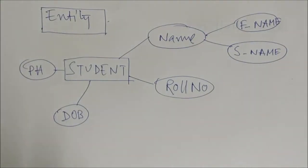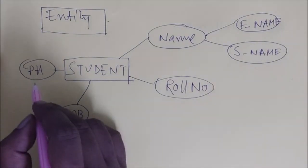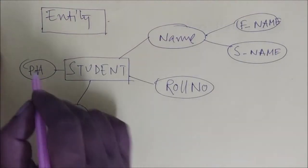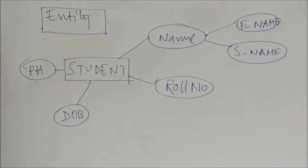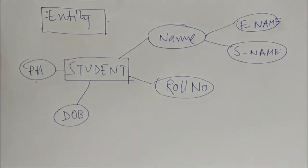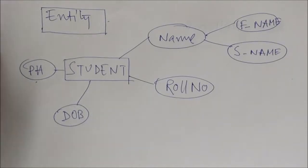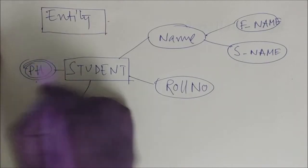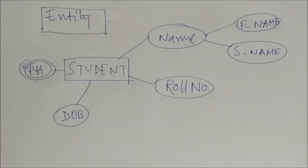Next is multi-valued attribute. For example, phone number is a multi-valued attribute because it has multiple values — one value is the STD code, another value is the phone number itself. Multi-valued attributes are represented by a double ellipse.